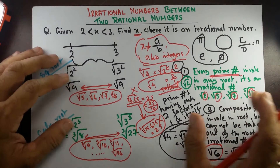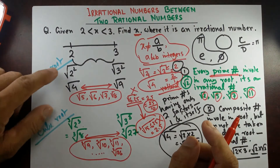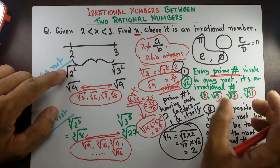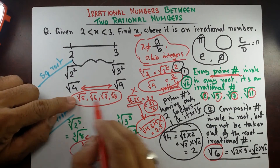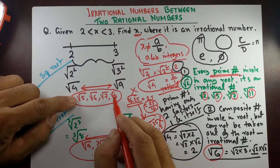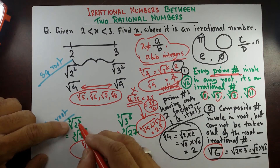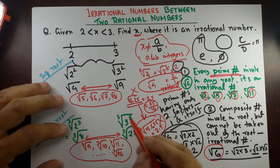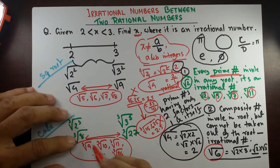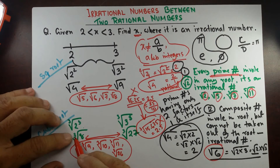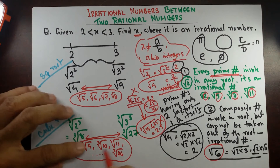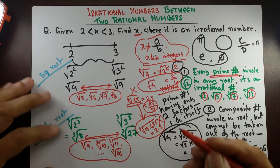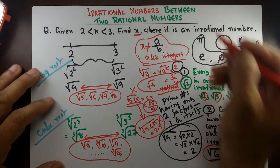So in this video I have shown you that perfect squares involving a square root are rational numbers, but any other integer values are irrational. And any perfect cube numbers involving a cube root are also rational, but any other numbers besides those perfect cubes under a cube root are irrational numbers.